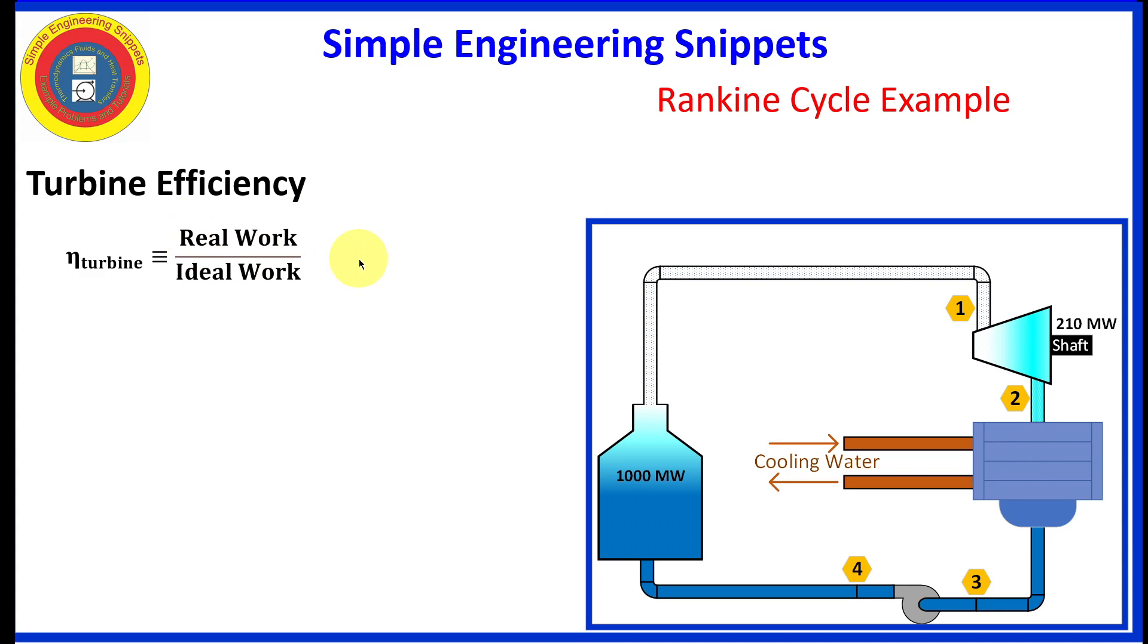Let's start with what is the definition of the efficiency of a turbine. It's the real work out divided by the ideal work. An ideal turbine will be putting out more work than a real turbine, and therefore this ratio will be less than one as expected. So we have a real work process in the numerator. Ideal work in the denominator.